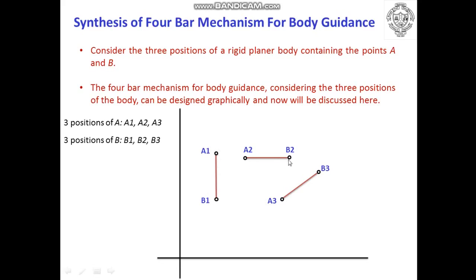The length of A1B1, A2B2 and A3B3 is the same and will be given in the example. Along with that, the X and Y coordinates of A1, B1, A2, B2, A3 and B3 will also be given. These are all assumptions stated by the designer with respect to the application. So to synthesize a four-bar mechanism for body guidance, you must know the length of the coupler, the three distinct positions the coupler must be guided through, and the respective coordinates of the endpoints through those three positions.